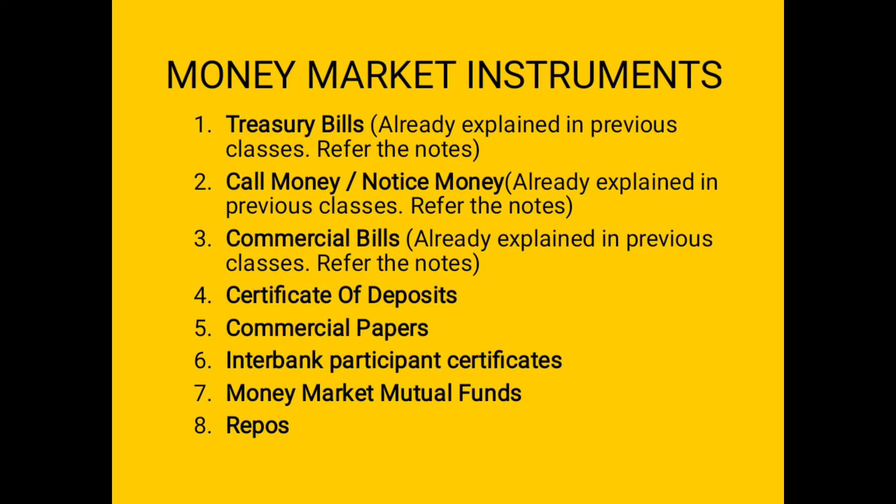The second money market instrument is call money or notice money. Call money or notice money is money issued for a very short time period — the maximum time period is seven days. It can be issued for one, two, or three days, and it can be recalled at any time. Whenever the bank recalls the call money, it should be paid back at that time itself.